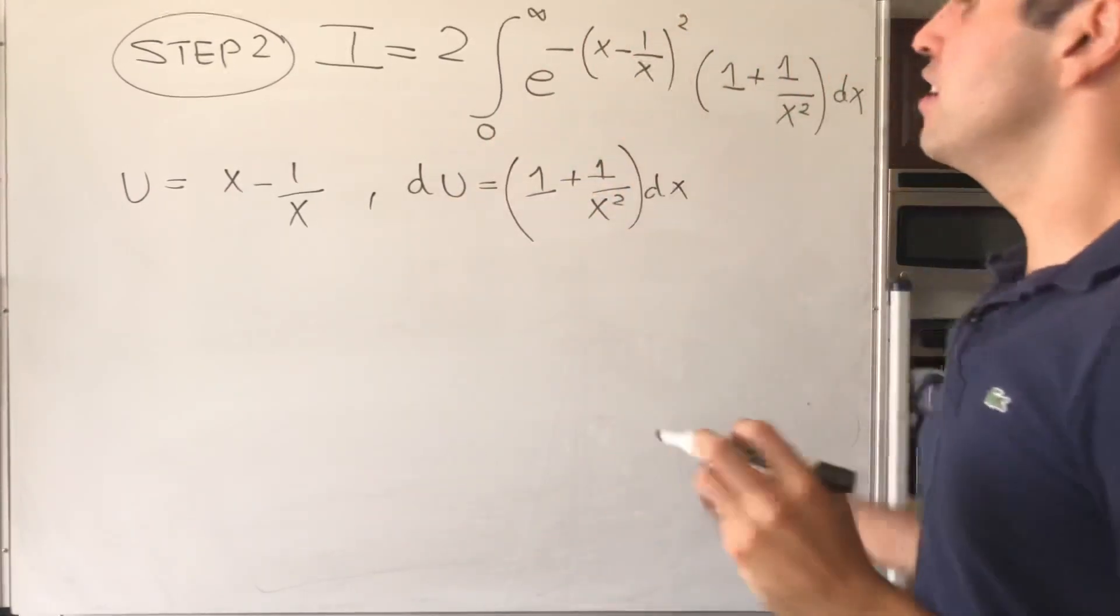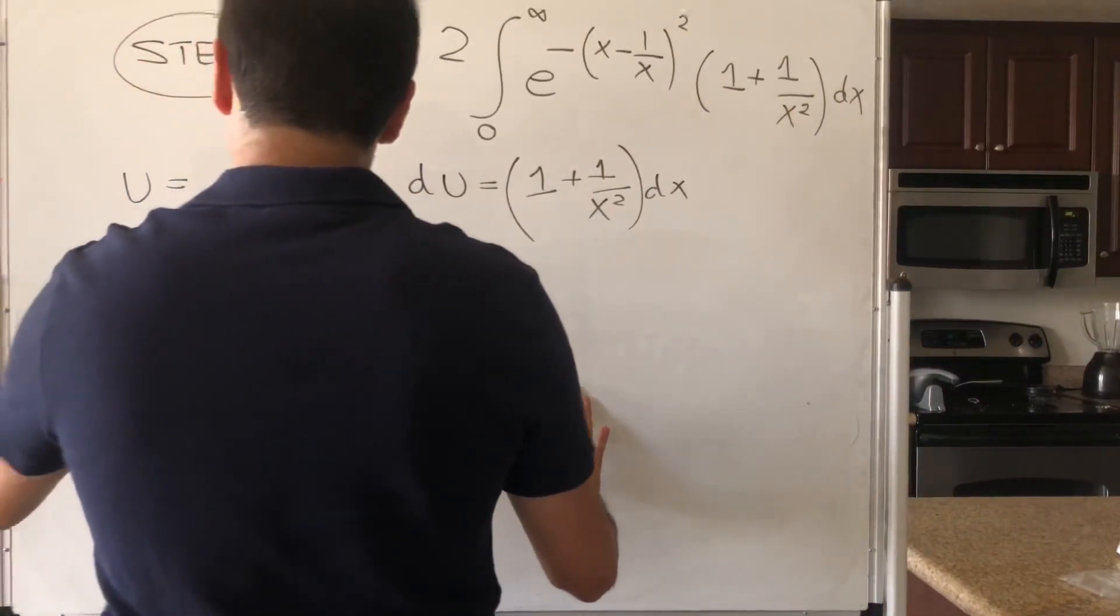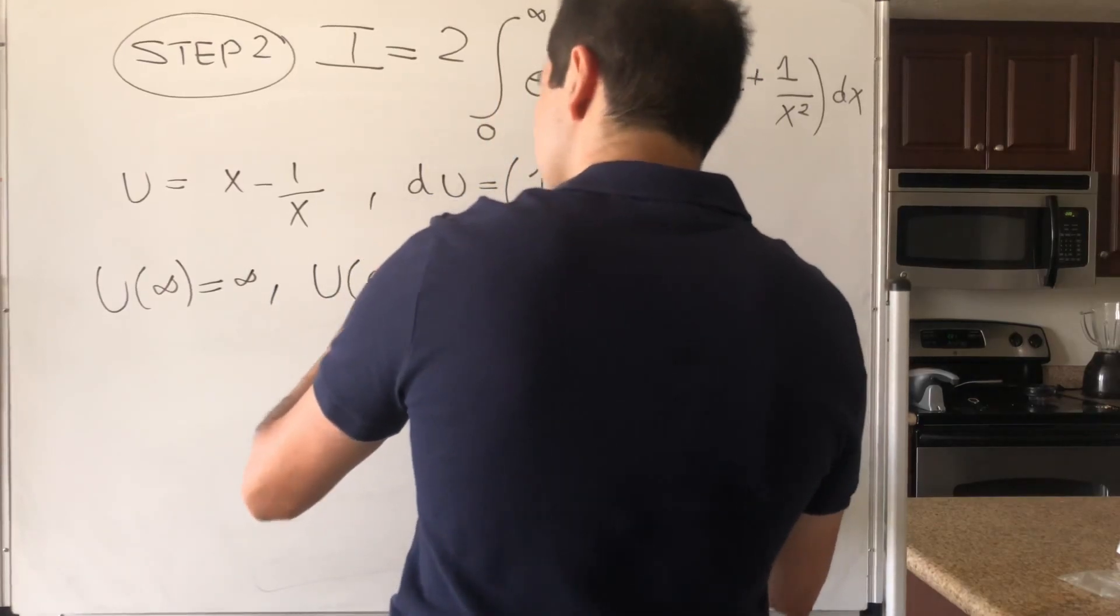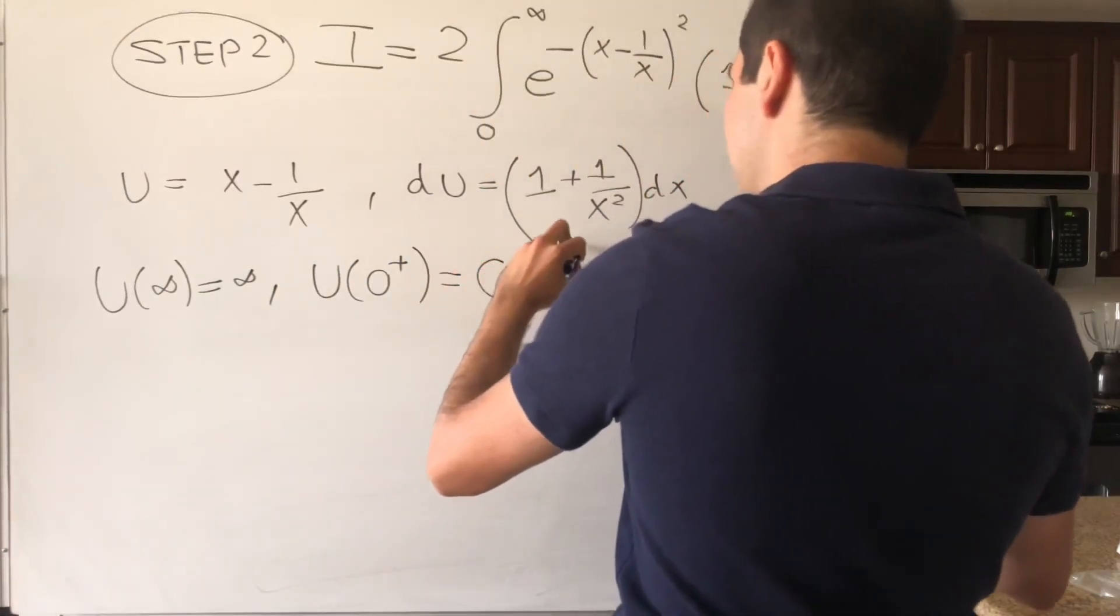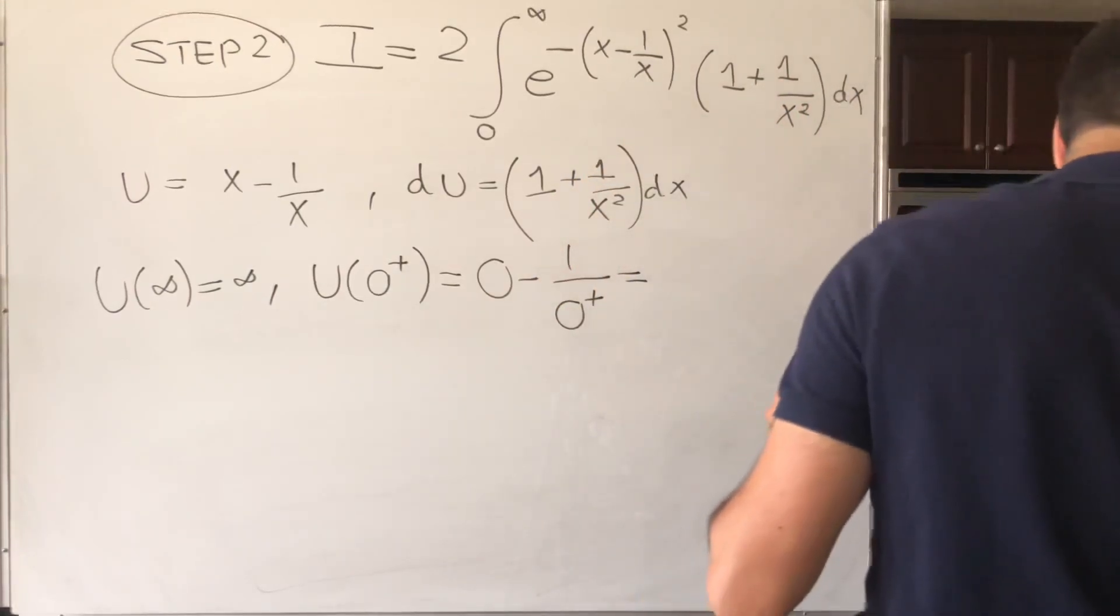But now just a little bit different because u of infinity, well that's still infinity, that's not a problem. But u of 0 plus, that is 0 minus 1 over 0 plus, and I believe that becomes minus infinity, yeah minus infinity.